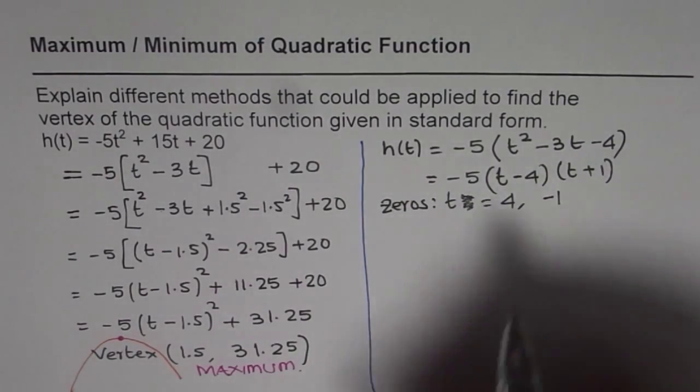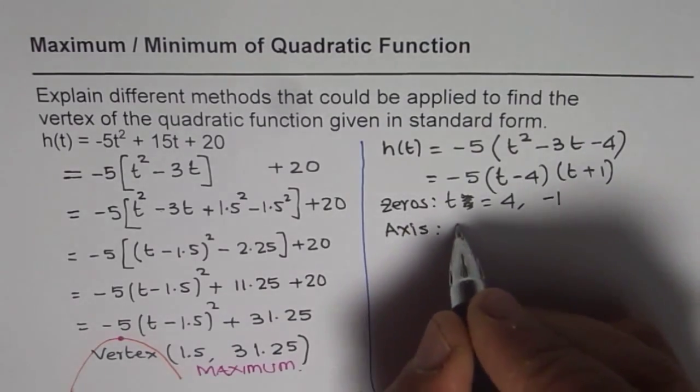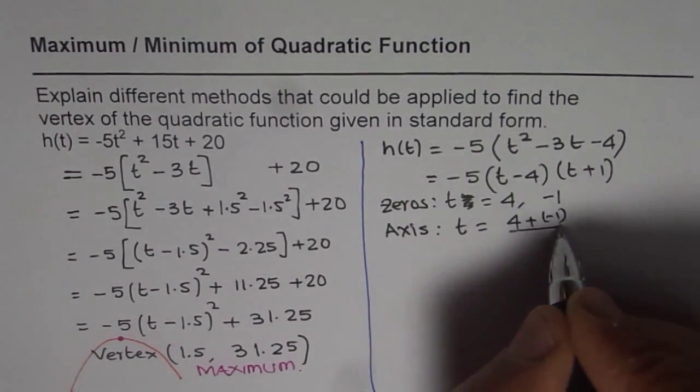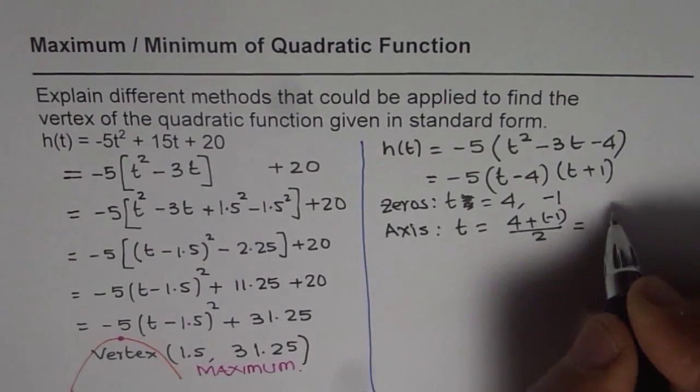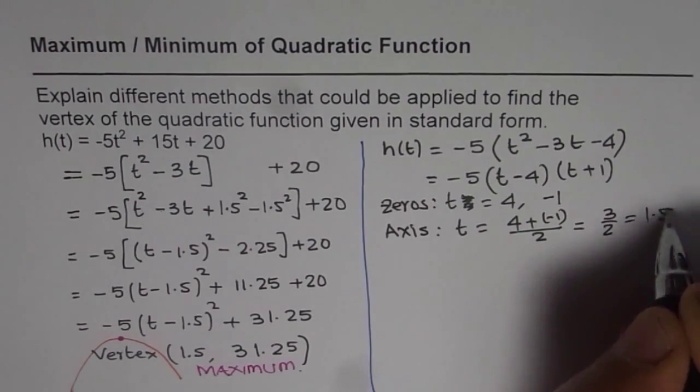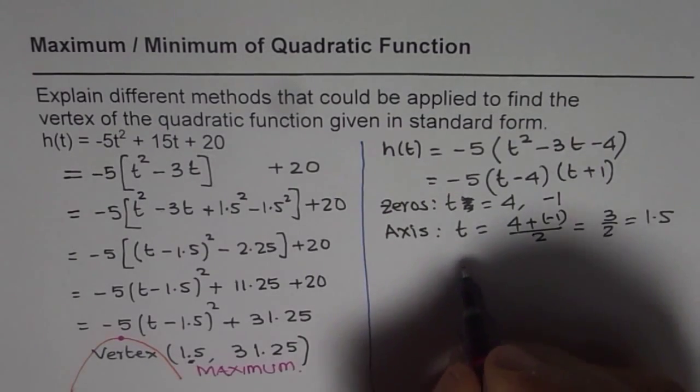So axis is at t = (4 + (-1))/2, which equals 3/2 or 1.5. So we get the same value of t and so we get the same value of the maximum. So that is one method which you can always use.